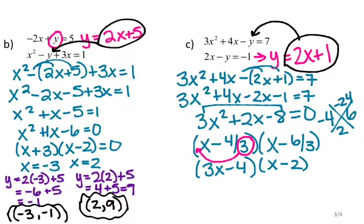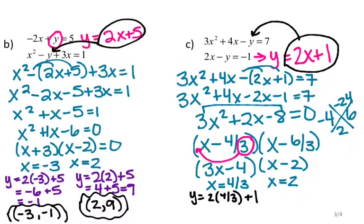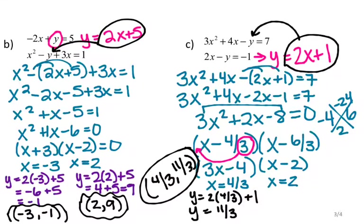Solving for x: the first factor gives x equals 4 thirds, and the second gives x equals 2. Plugging x equals 4 thirds into my circled equation: y equals 2 times 4 thirds plus 1, which equals 11 thirds. So the first ordered pair is 4 thirds, 11 thirds. For x equals 2: y equals 2 times 2 plus 1, so y equals 5. The second ordered pair is 2, 5.